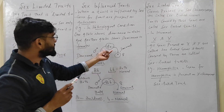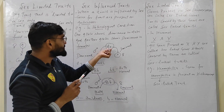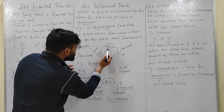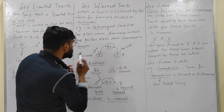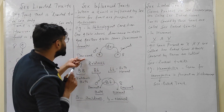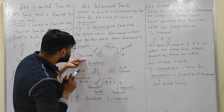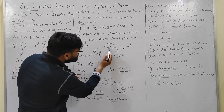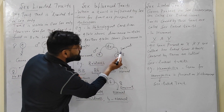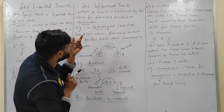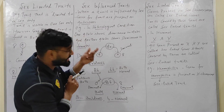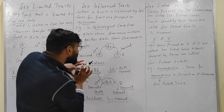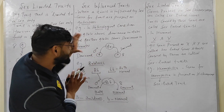In the heterozygous condition (capital A, small a), capital A shows dominance in male and small a shows dominance in female. So this is called a sex-influenced trait — here you can see that the trait is influenced by sex.